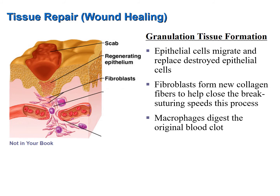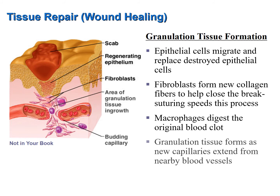Macrophages, a type of white blood cell that phagocytizes objects, begin digesting away the blood clot as new cells replace the old ones. The blood clot was mainly a temporary patch, and as new cells form it is removed by macrophages. To support all of this activity, new blood vessels — specifically capillaries — begin to sprout and move into the area to provide a steady supply of nutrients and oxygen, extending just below the scab.